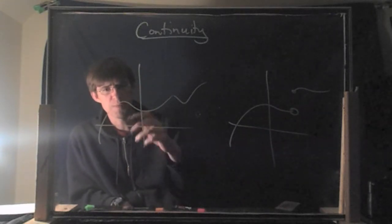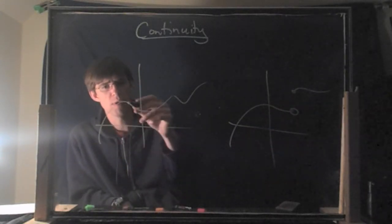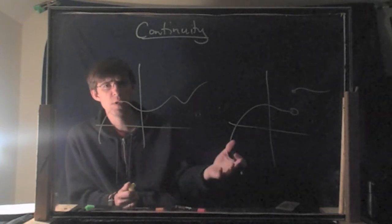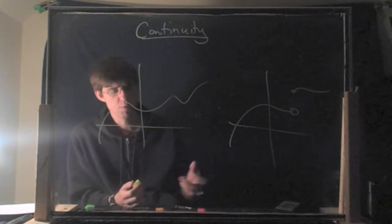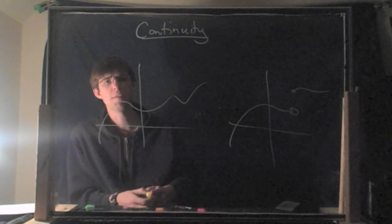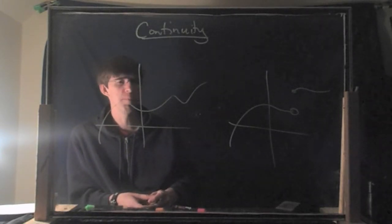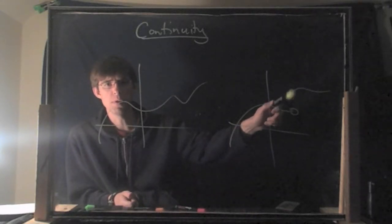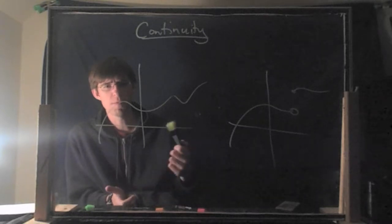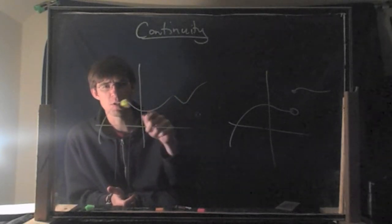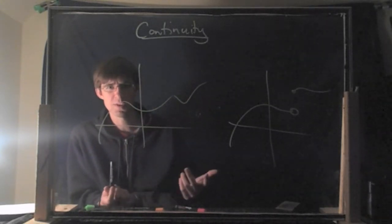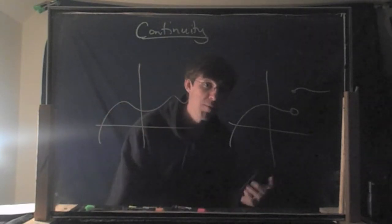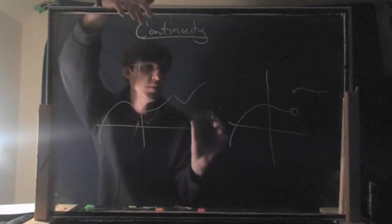Some people say things like a continuous function means you can draw the graph without lifting your pencil. This might seem good enough as a definition, but it's actually not a very good definition because I'm not using mathematical terminology when I say things like 'there's no jumpy things.' The first thing I said is a continuous function means the curve is this one continuous thing, but I just used the same word again. That's not a real definition, so we're going to get into the details.